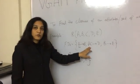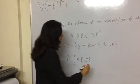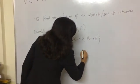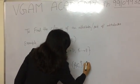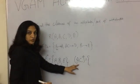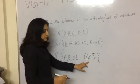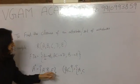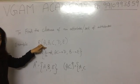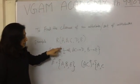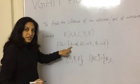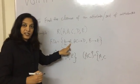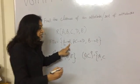Now let's find the closure of attribute AC. As there are two attributes, we will put both A and C in the set. Again, start with the first functional dependency. A is the left side of the functional dependency, and A is in the set.